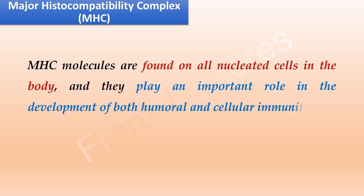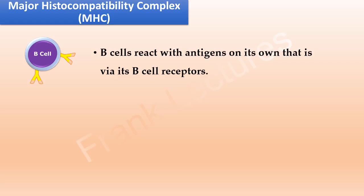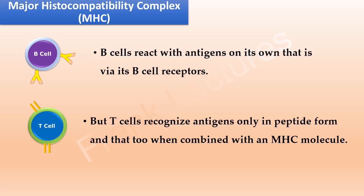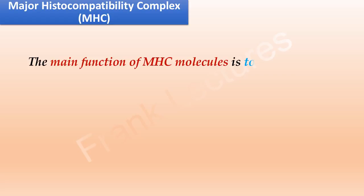B cells react with antigens on their own, but T cells recognize antigens only in peptide form and only when combined with an MHC molecule. Therefore, the main function of MHC molecules is to bring antigen to the cell surface for recognition by T cells.